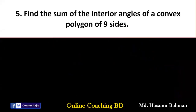Now number 5. Number 5 says: find the sum of the interior angles of a convex polygon of 9 sides. That is a very easy one, but we have to understand some basic things.